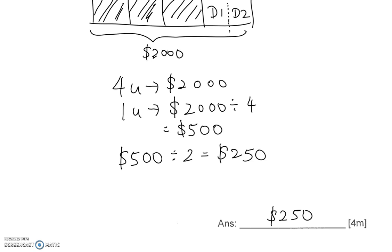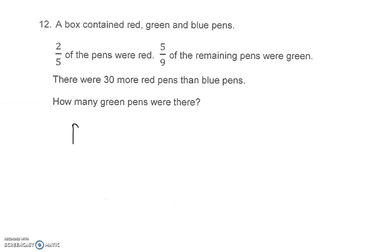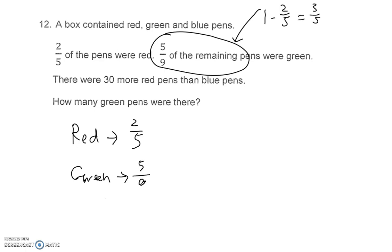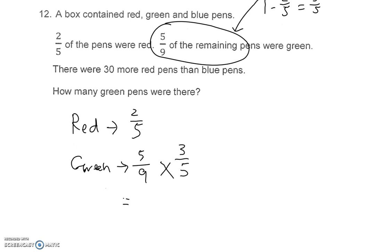Let's look at question 12. Question 12, you have got red pen, which is 2 fifth. You have got green. Now green is a little challenging because they said 5/9 of the remaining. This is the remaining after you take out your red pen. Okay, so it is going to be 5/9 of the remaining, which is what is left after the red pen, 3 fifth. You will get the answer 1 third.